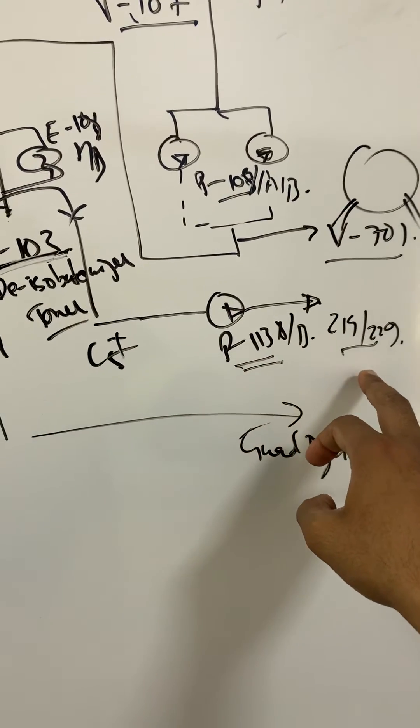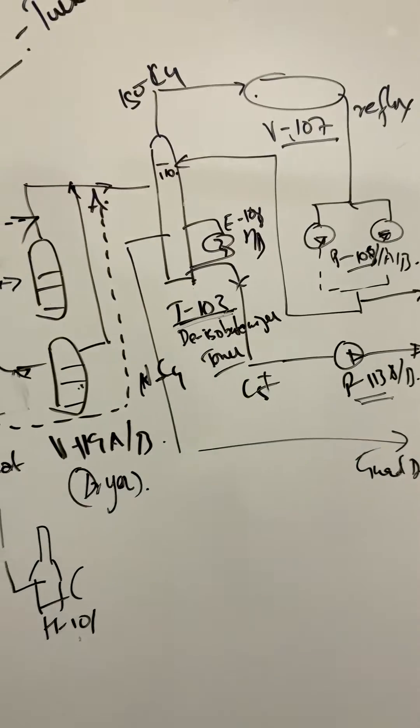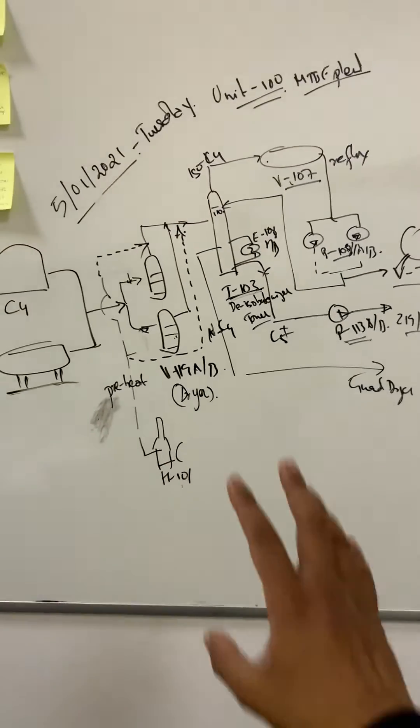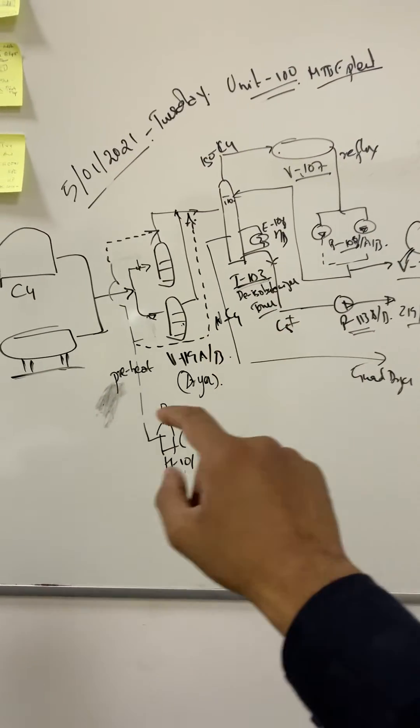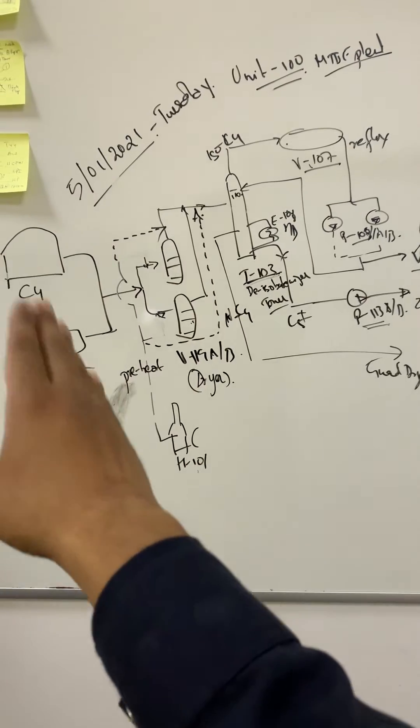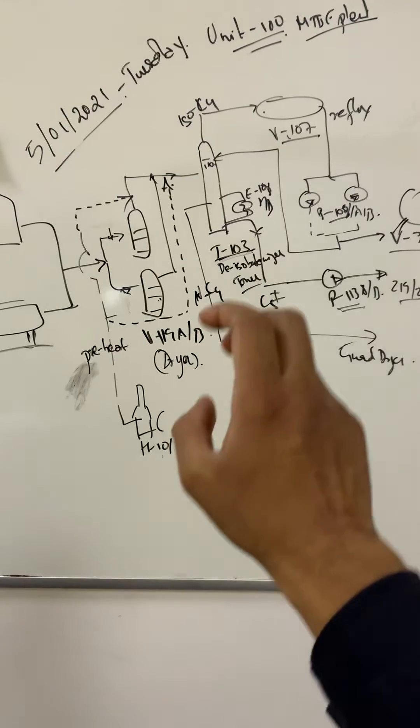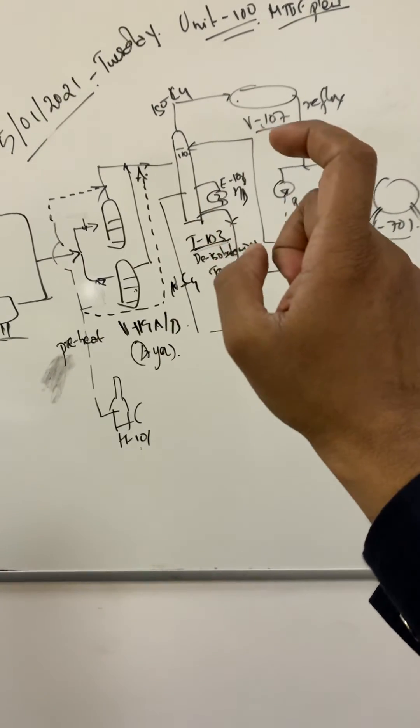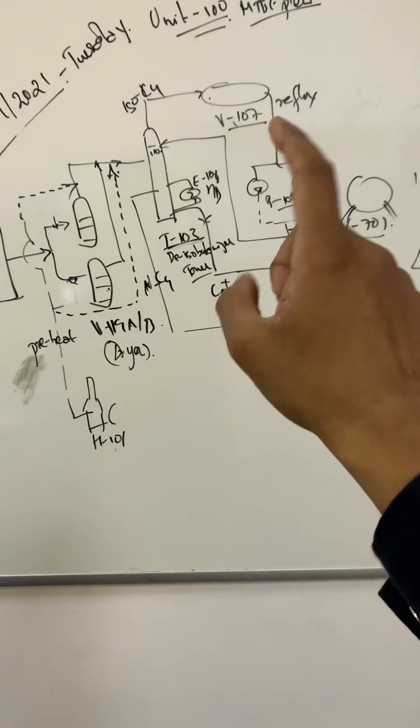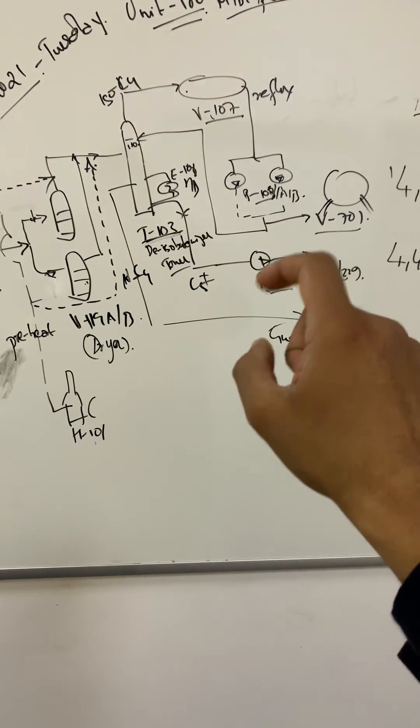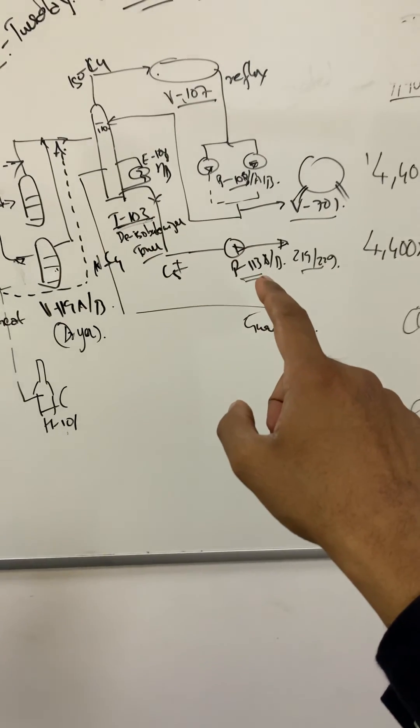All right, so guys, this is the operations. The vessels: dryers V119 AB, preheater H101, T103 de-butanizer, reflux V107, P108 AB bottom, P113 AB.